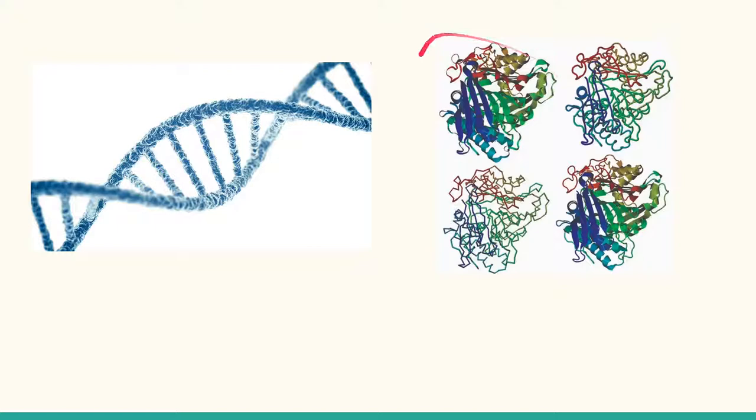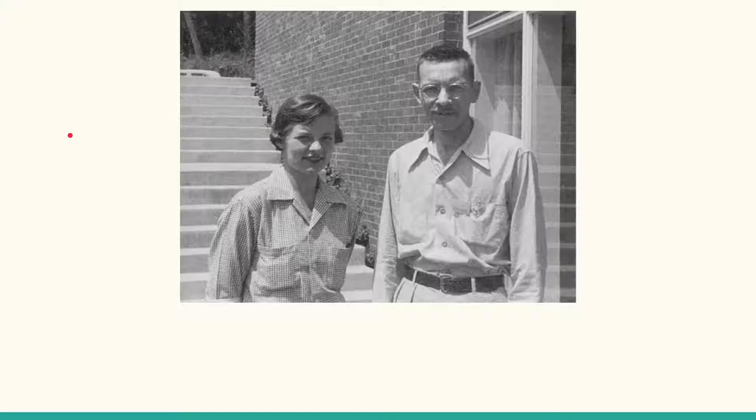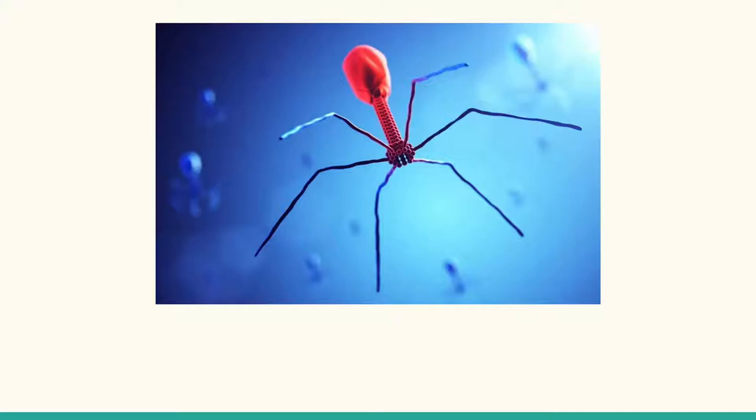In the 40s and 50s, the scientific community was in the midst of a debate as to whether proteins or DNA were the genetic material. A multitude of experiments were conducted to answer this question. One of the most well-known were conducted by Alfred Hershey and Martha Chase in 1952. Hershey and Chase decided to find the answer to this pressing question using a simple model organism that could be easily observed and manipulated — a bacteriophage.